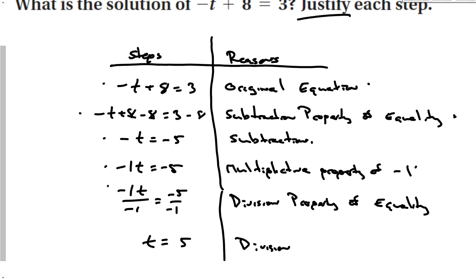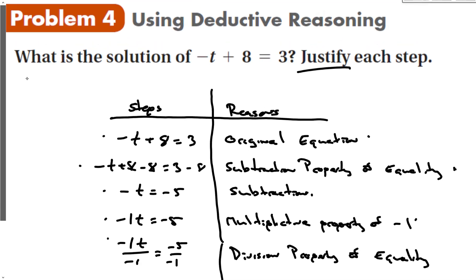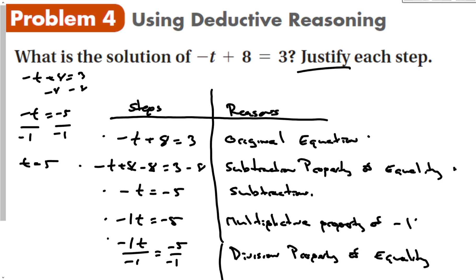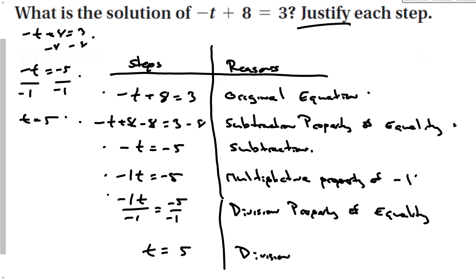Technically, you are doing all of this every time you solve a two-step equation, but we don't necessarily have to write out every single step or give a reason. In normal method: negative t plus 8 equals 3; subtract 8 from both sides — negative t equals negative 5; divide by negative 1 — t equals 5. As long as you understand each step comes from these properties, you can solve any two-step equation.